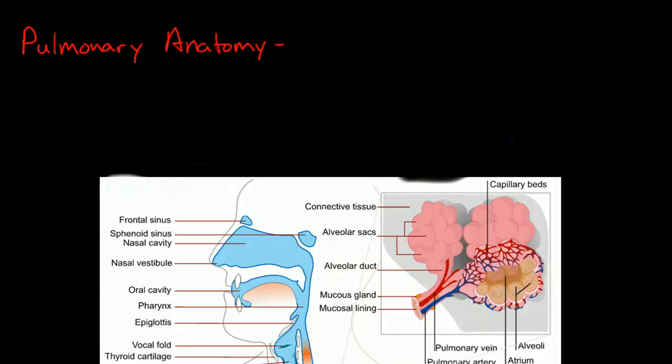In this section we're going to talk about the pulmonary anatomy. We're going to start by talking about the different airways of the lungs. The first types of airways are what's called the conducting airways.